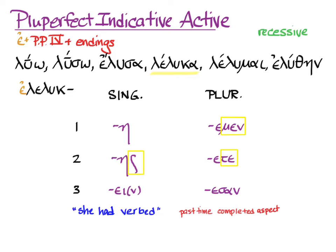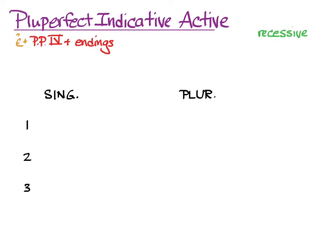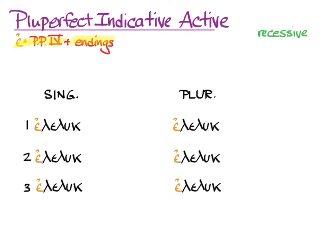So let's put this together: principal part four, endings, recessive accent — all of which need to have the augment at the beginning. So here, in all the persons and numbers, is the augment and principal part four.